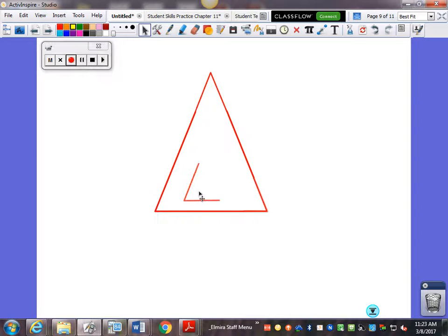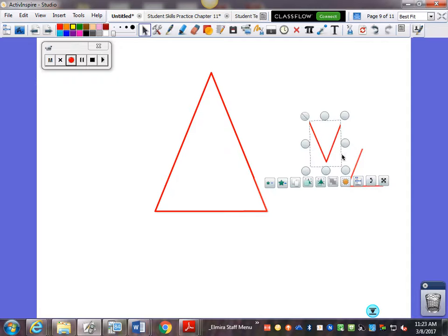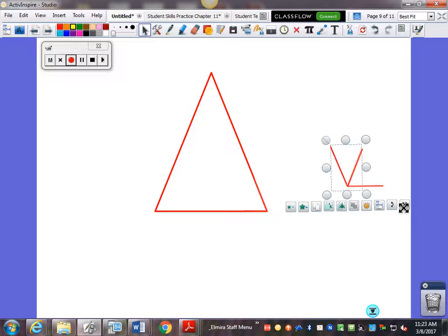All right, so if I take this angle off, and I take this angle off, and I'm going to spin it around so it fits next to this one. And if I take this angle off, what happens there?